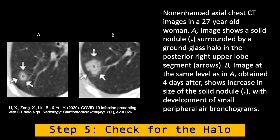Another part is also to check for any forms of halos. This is a typical example published this year with a COVID-19 infection, where a 27-year-old female showed a solid nodule surrounded by a ground glass halo in the posterior right upper lobe. Image B, obtained four days later, showed increased size in the solid nodule and development of a small area of peripheral air bronchogram as indicated by the white arrows.